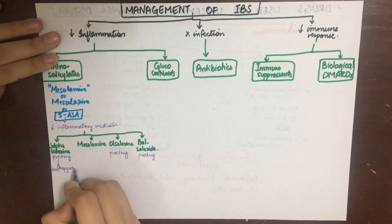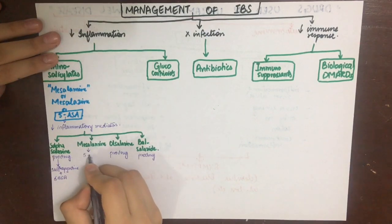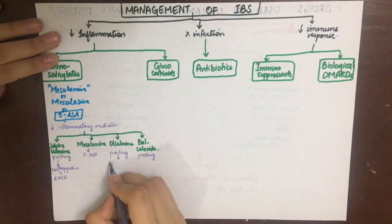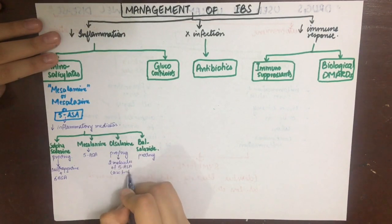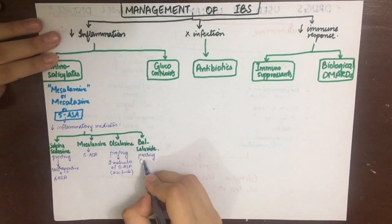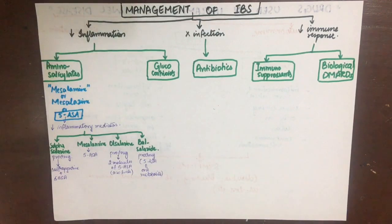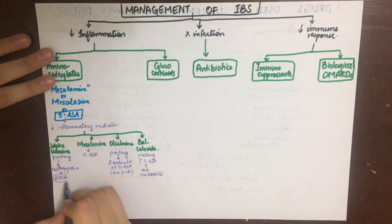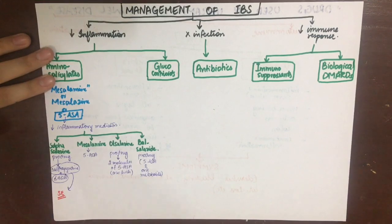Sulfasalazine is composed of sulfapyridine and 5-ASA. Mesalamine is 5-ASA itself. Olsalazine is two molecules of 5-ASA linked by an azo linkage. Balsalazide is 5-ASA linked to another metabolite. When colonic bacteria act on sulfasalazine, it is converted into sulfapyridine and 5-ASA.